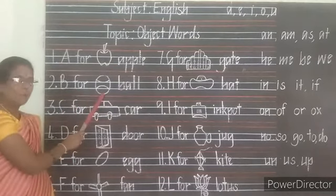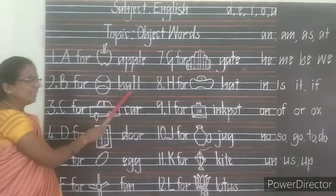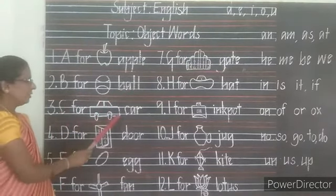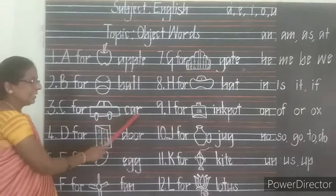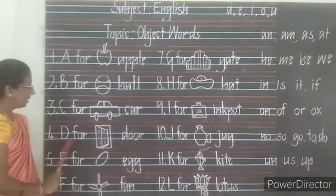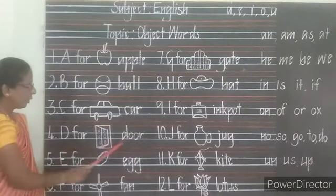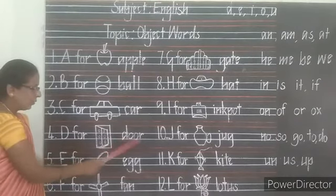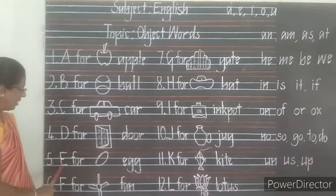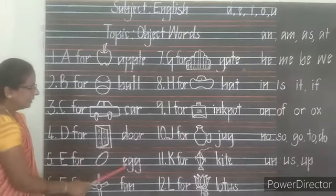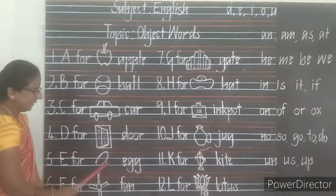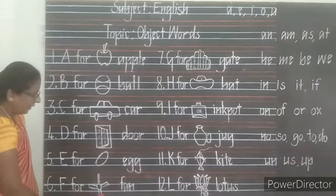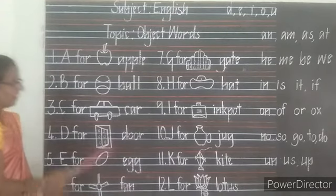B — Ball. B-A-L-L, Ball. C — Car. C-A-R, Car. D — Do. E — Egg. E-G-G, Egg. F — Fan. F-A-N, Fan.